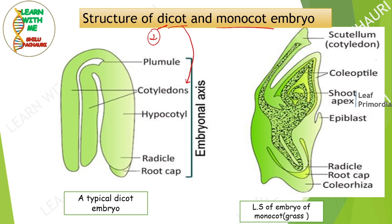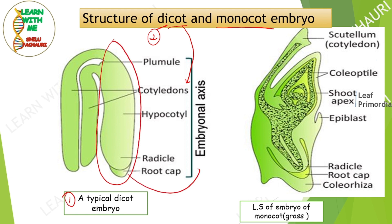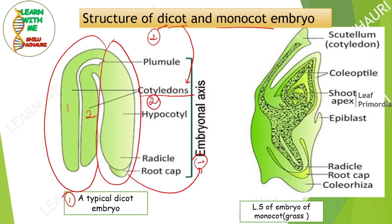This image is taken from the NCERT book — I have deliberately used it so that any doubts you have about this image will be cleared today. A typical dicot embryo has two main parts: the first is the embryonal axis, and the second is the cotyledons. In a dicot embryo, there will be two cotyledons present.